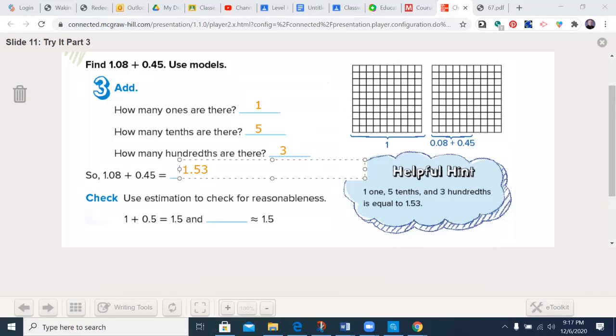We could estimate 0.45 is close to a half. 1.08 is close to one. 1.53 is pretty close to 1.5.